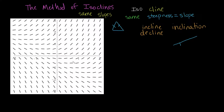Let me tell you what this slope field could be. Let's imagine that it is y prime equals x plus y. This is y prime equals x plus y. So this slope, at any given point — this dy/dx, this y prime — is going to be the x-coordinate plus the y-coordinate.